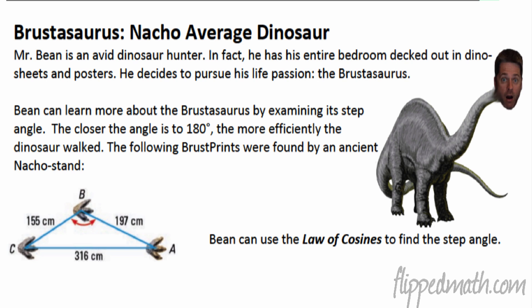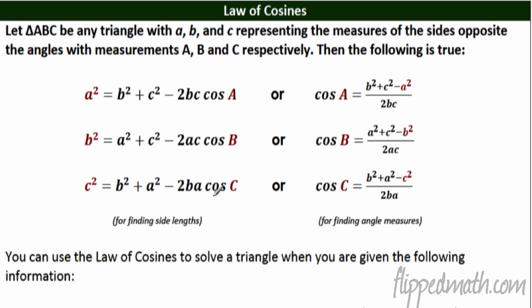Mr. Bean is an avid dinosaur hunter. In fact, his entire bedroom is decked out in Dino sheets and posters. It's actually a true story. He decides to pursue his life passion, the Brustosaurus. Alright, so Bean can learn more about the Brustosaurus by examining its step angle. The closer the angle is to 180 degrees, the more efficiently the dinosaur walked. The following Brustprints were found by an ancient Nacho stand. We can use the Law of Cosines to find the step angle.